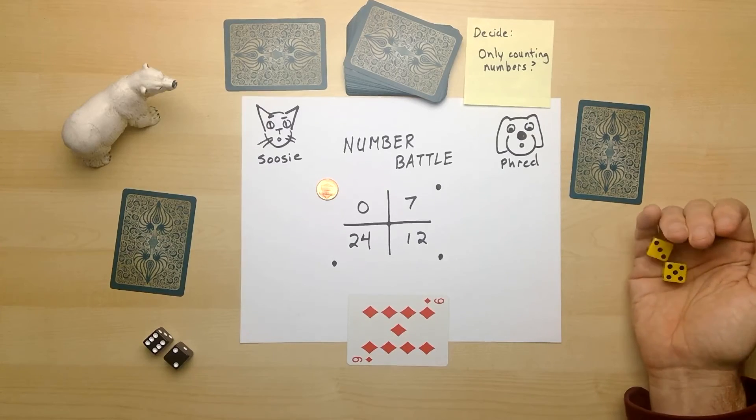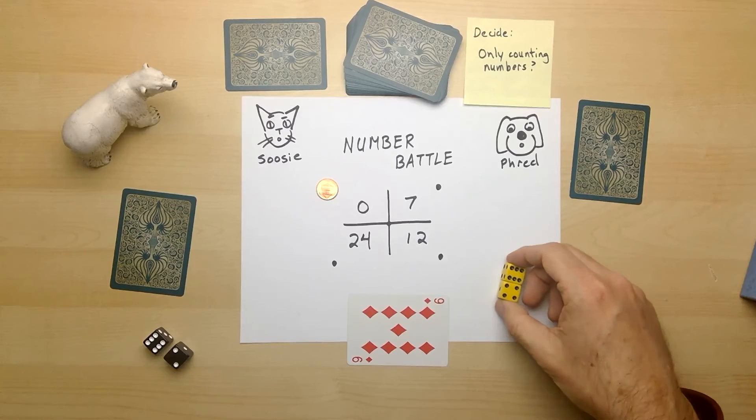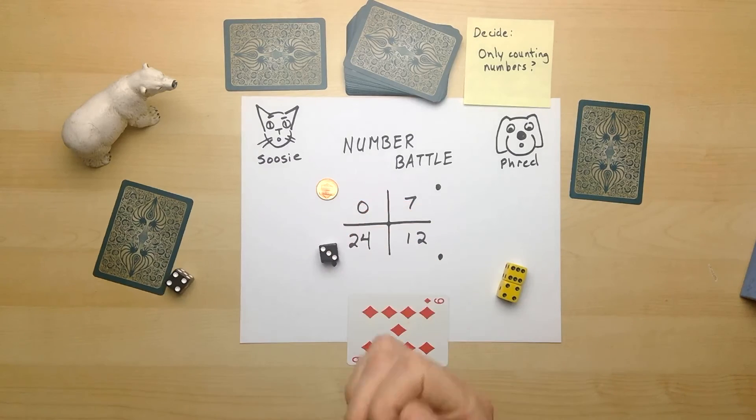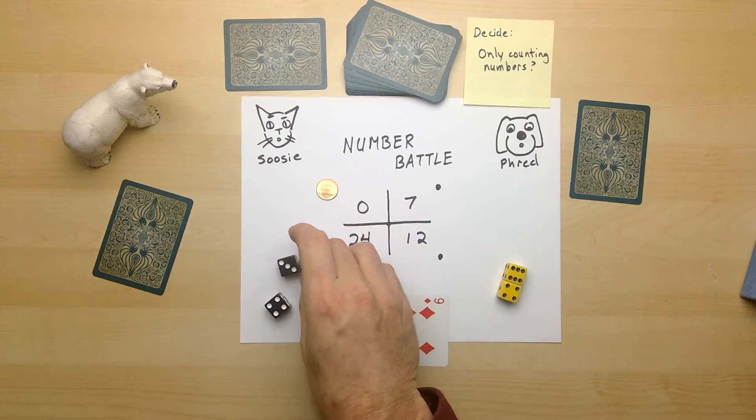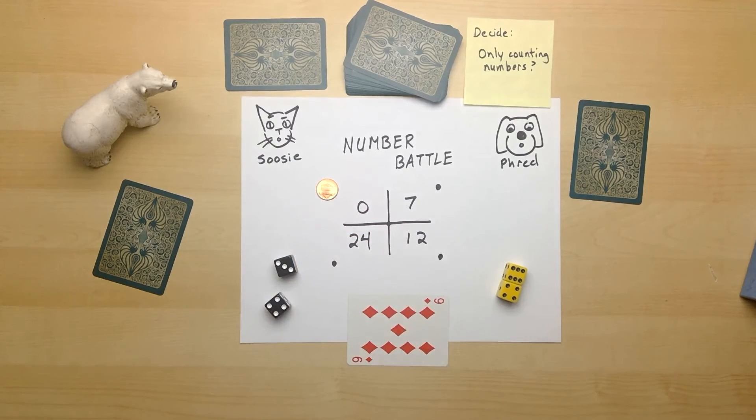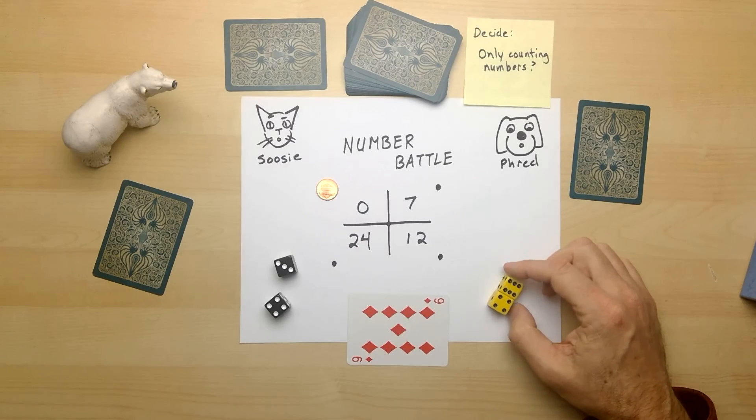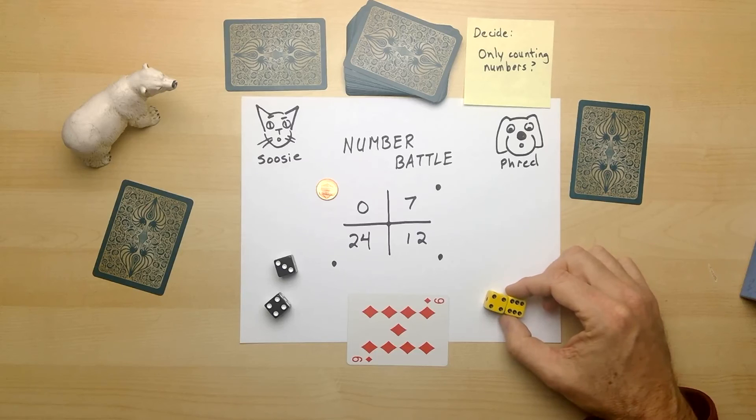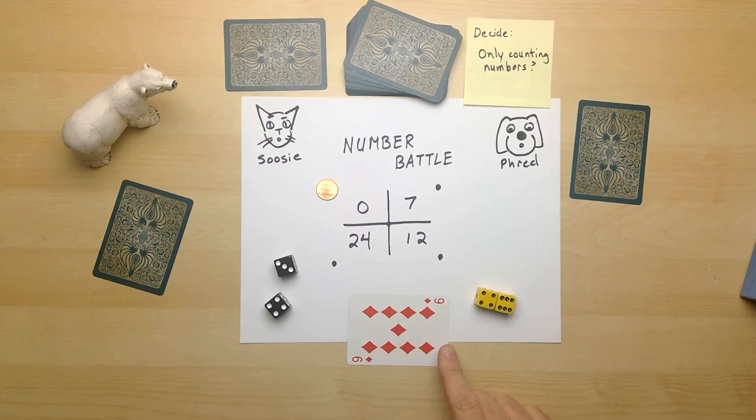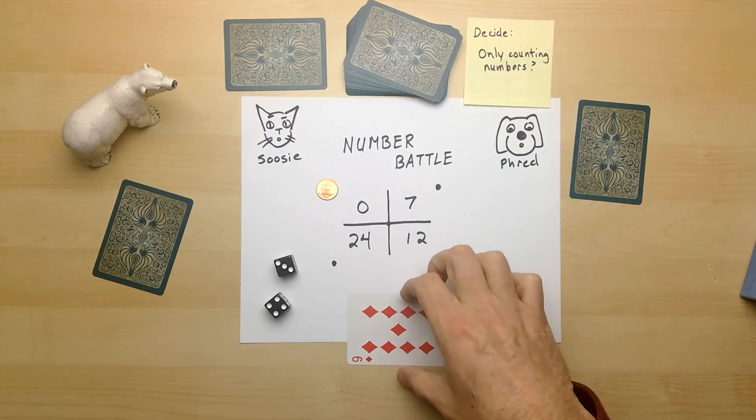And Fred's going to roll. Fred got a good roll, didn't Fred get a good roll? And Susie has a good roll as well. Let's see what we have. Susie can take nine, subtract four, and subtract three more and get a two. That's pretty close to zero. But look what Fred has. Fred has six and four. Six and four make 10. And 10 minus nine gives us one, which is closer to zero. So Fred wins this number battle and takes the card.